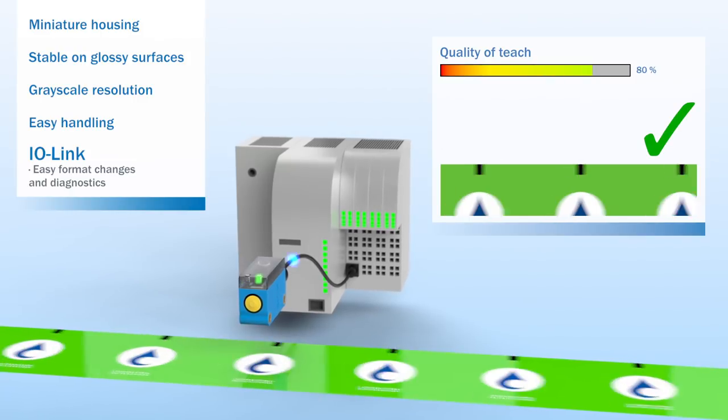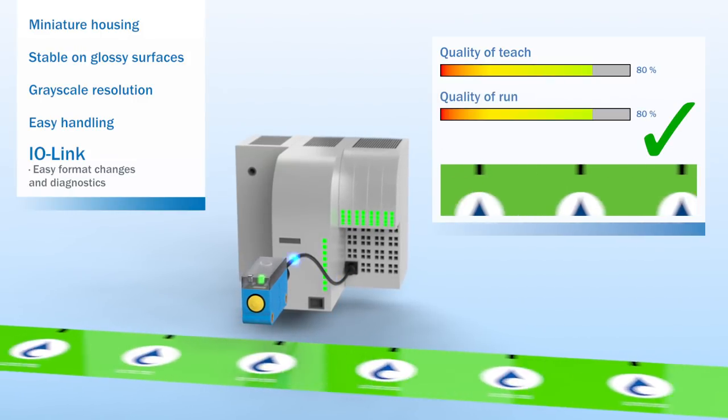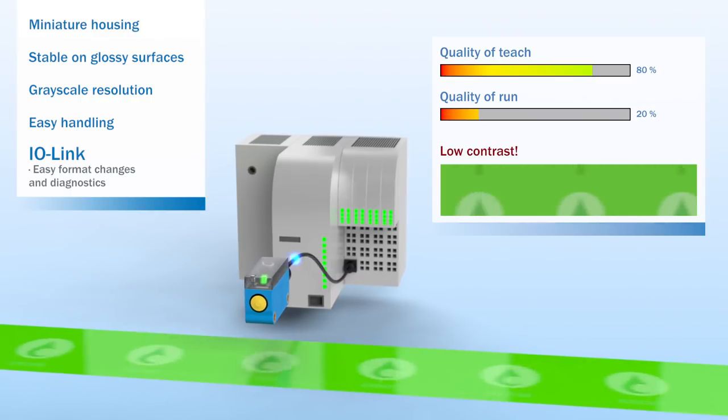If the value changes while the process is in progress, the Quality of Run function reports back immediately.